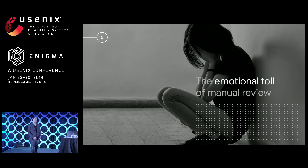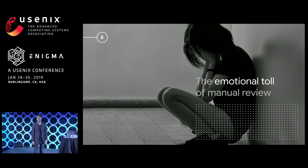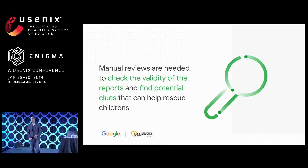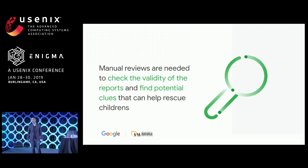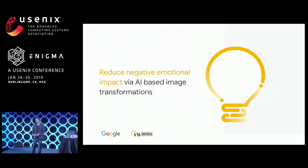Last but not least, I cannot close this talk without addressing the emotional toll of doing manual reviews. While we talk about technology, this technology is meant for and by humans, so it's very important to reflect on how much impact this work has on the people doing manual reviews. Manual reviews are much needed because we don't have a system that can detect child sexual abuse reliably and perfectly — we have to double-check. There is also no good way to find all the clues useful to identify the victim and the perpetrator, and day in and day out, people across all NGOs review this content, and it takes a great toll on them.